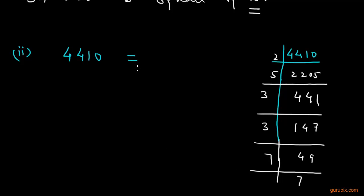So, we can write this 4410 like this: 7 into 7 into 3 into 3 into 5 into 2. And now we shall make groups of factors in pairs of equal factors like this.